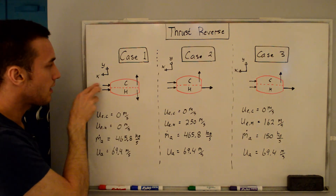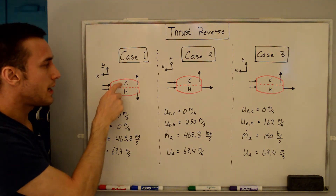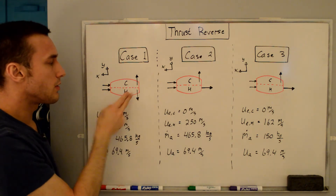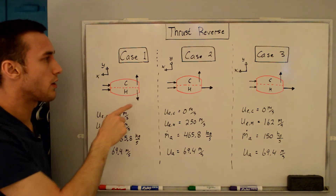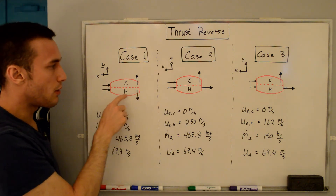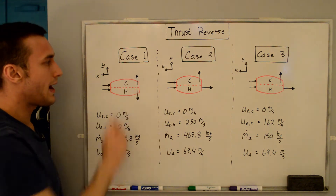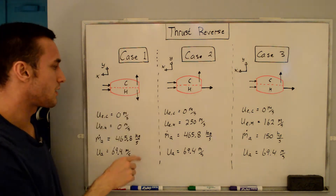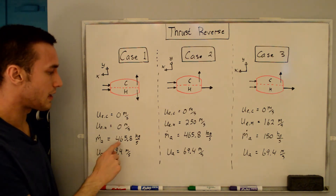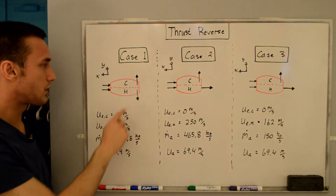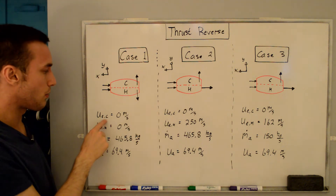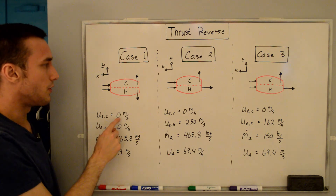For case one we have the incoming mass flow rates for the cold (bypass) and hot (core) streams. In this case we're deflecting both streams 90 degrees perpendicular to the x-axis. We're solving for thrust along the x-axis, so if a stream has no x-component, it contributes nothing to thrust in that direction. We're operating at full thrust, so M_A is 465.8 kg/s, and since both streams are deflected perpendicular to the x-axis, the exit velocities for both cold and hot streams are zero meters per second. The flight speed is 69.4 m/s.